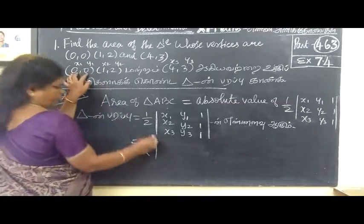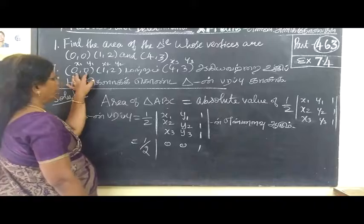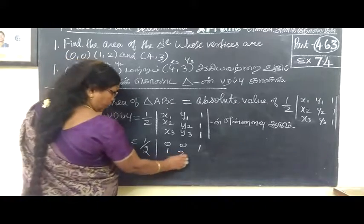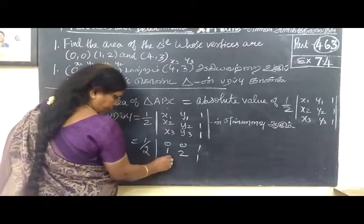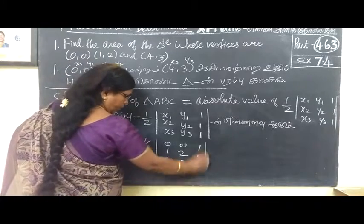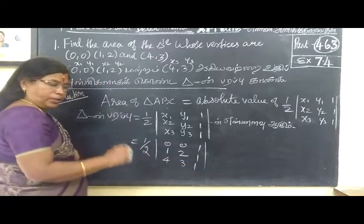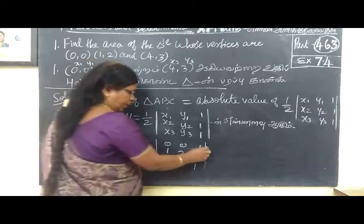This one is like x1, y1, 0, 0, 1 will be formed, then x2, y2, 2, 3, 1, then x3, y3, 4, 3, 1. Let's expand.